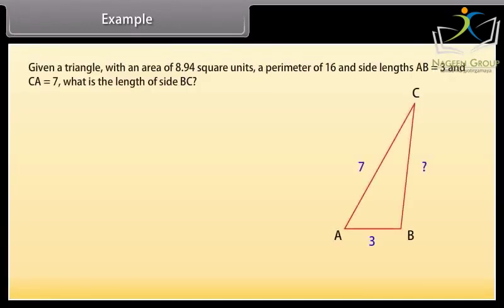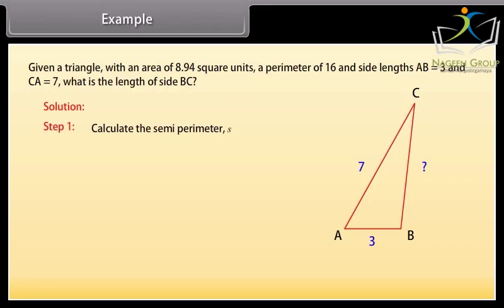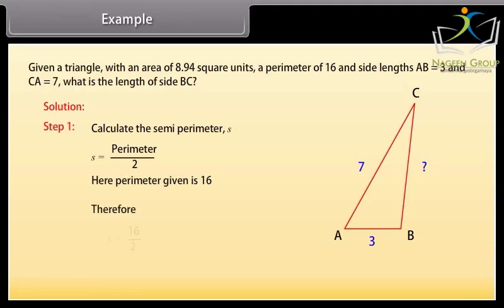Given a triangle with an area of 8.94 square units, a perimeter of 16, and side lengths AB = 3 and CA = 7. What is the length of side BC? Step 1: calculate the semi-perimeter S = perimeter / 2. Here the perimeter given is 16, therefore S = 16 / 2 = 8.